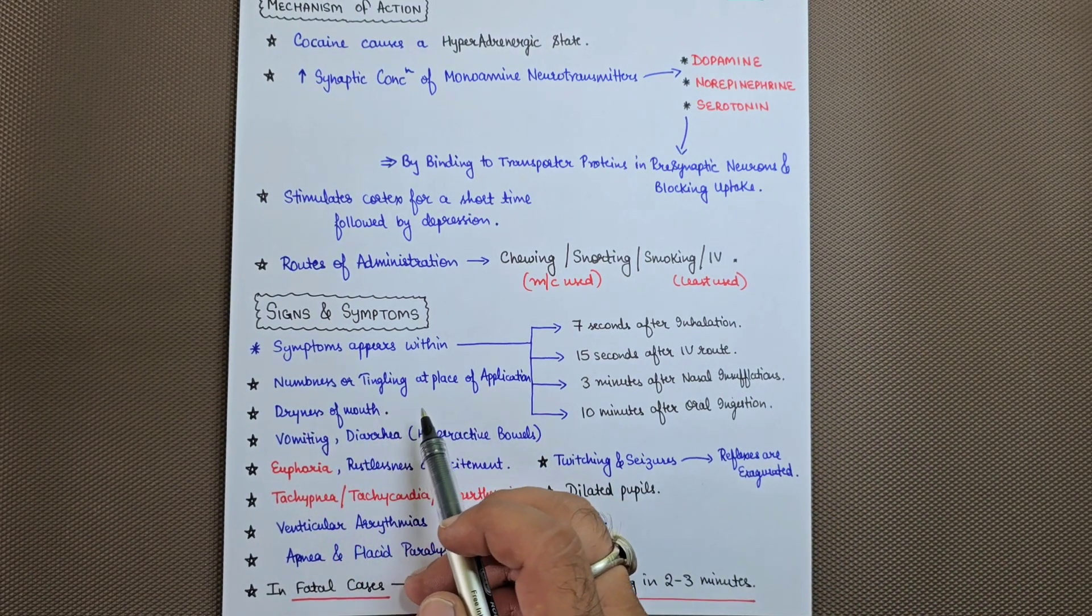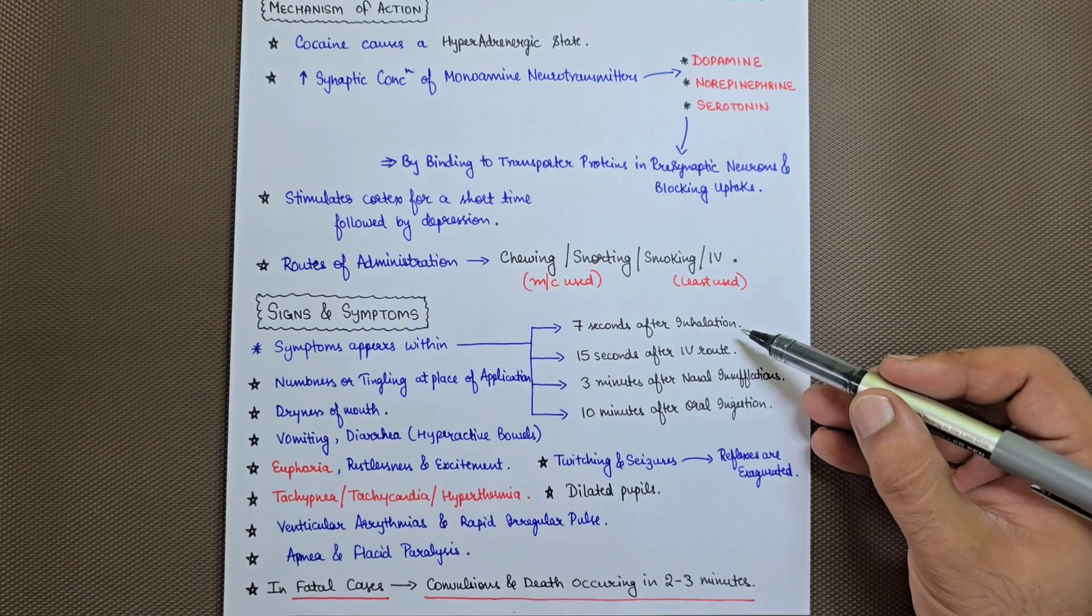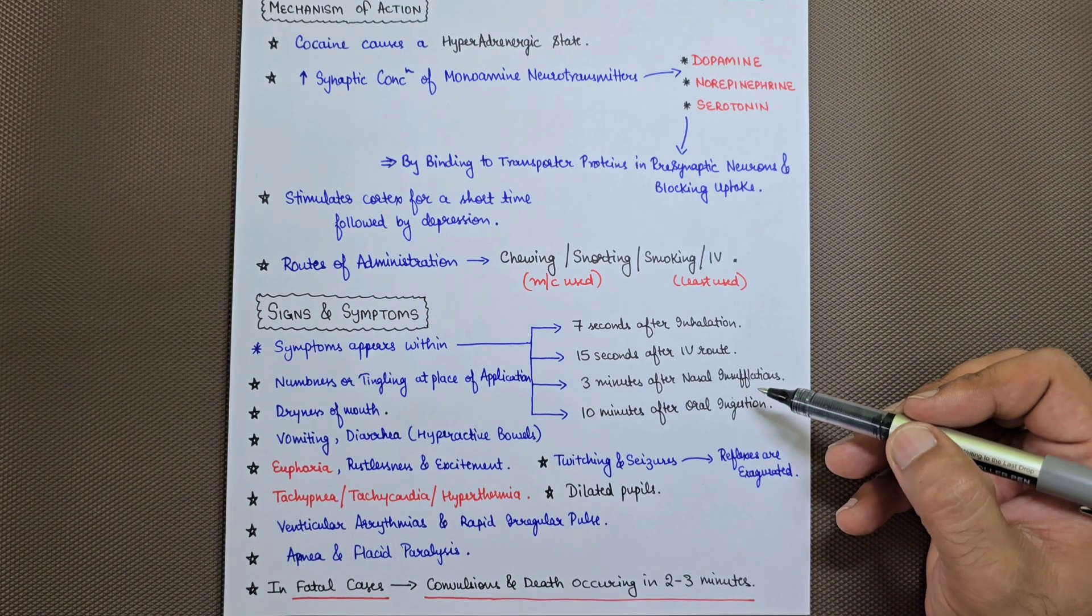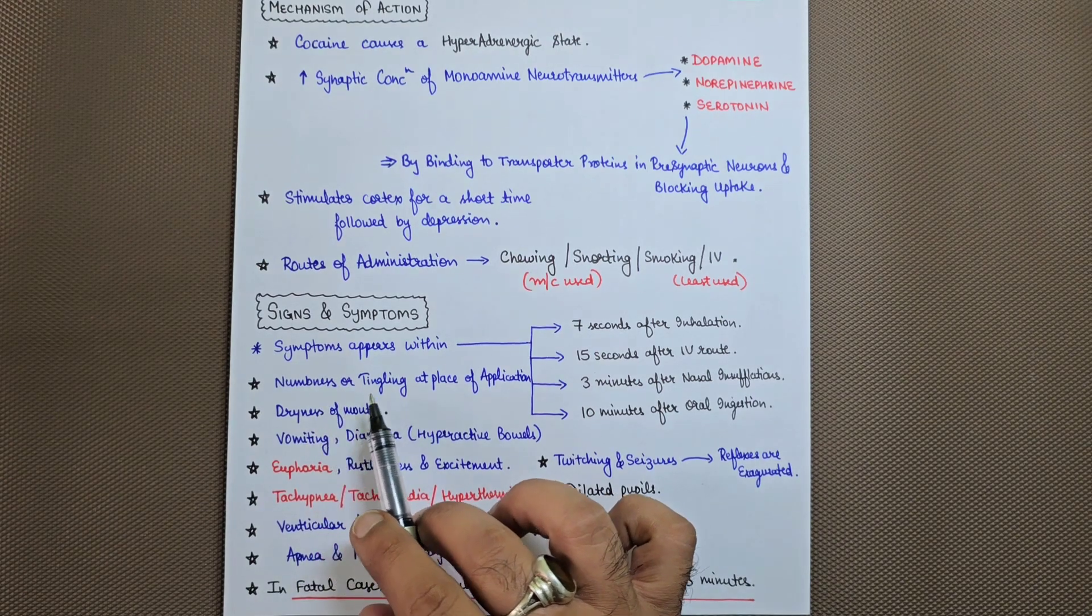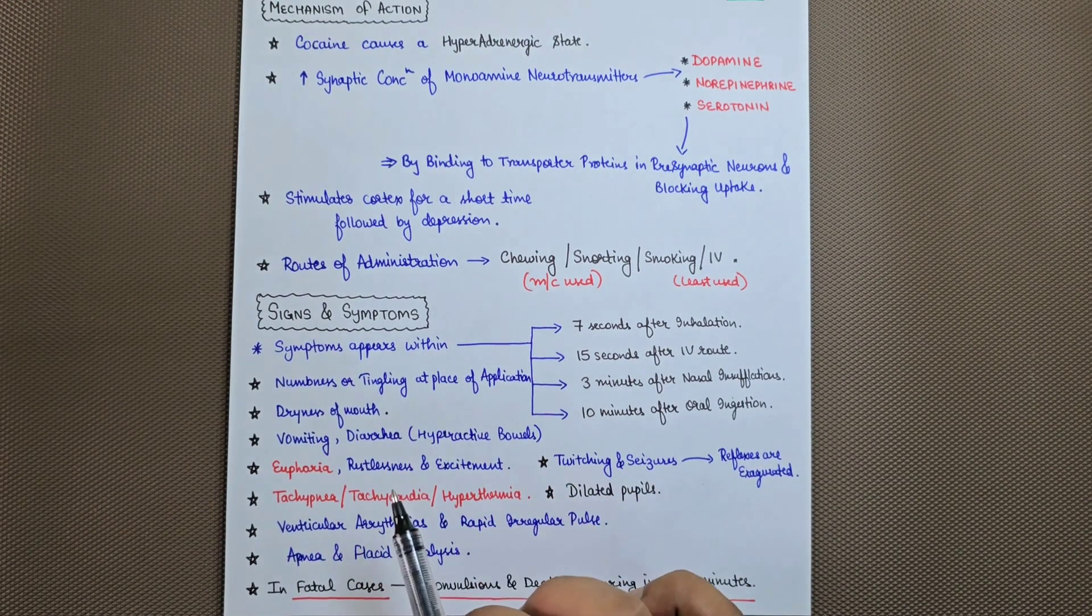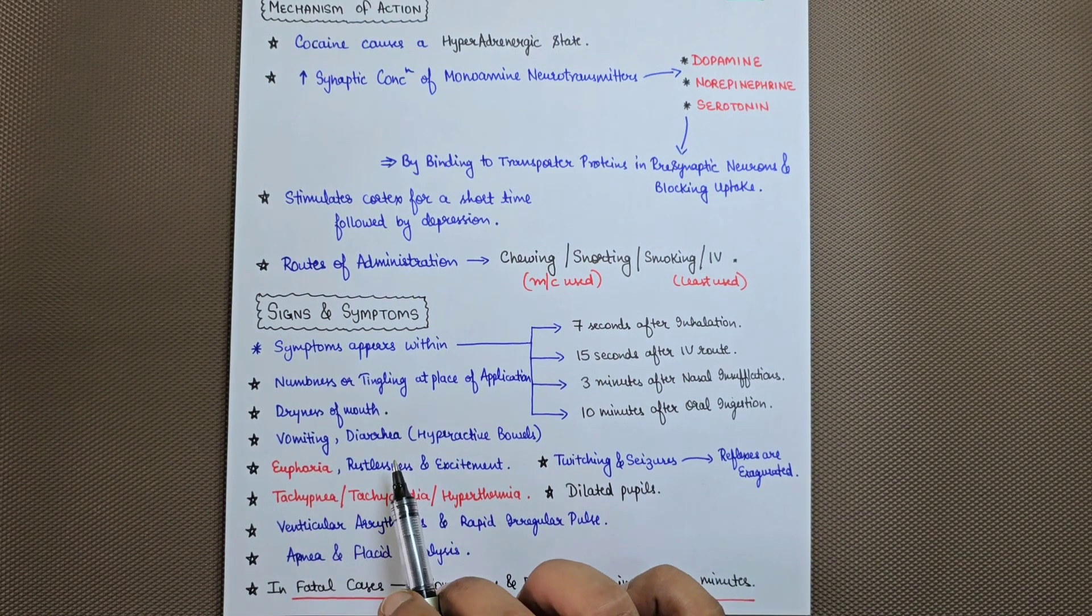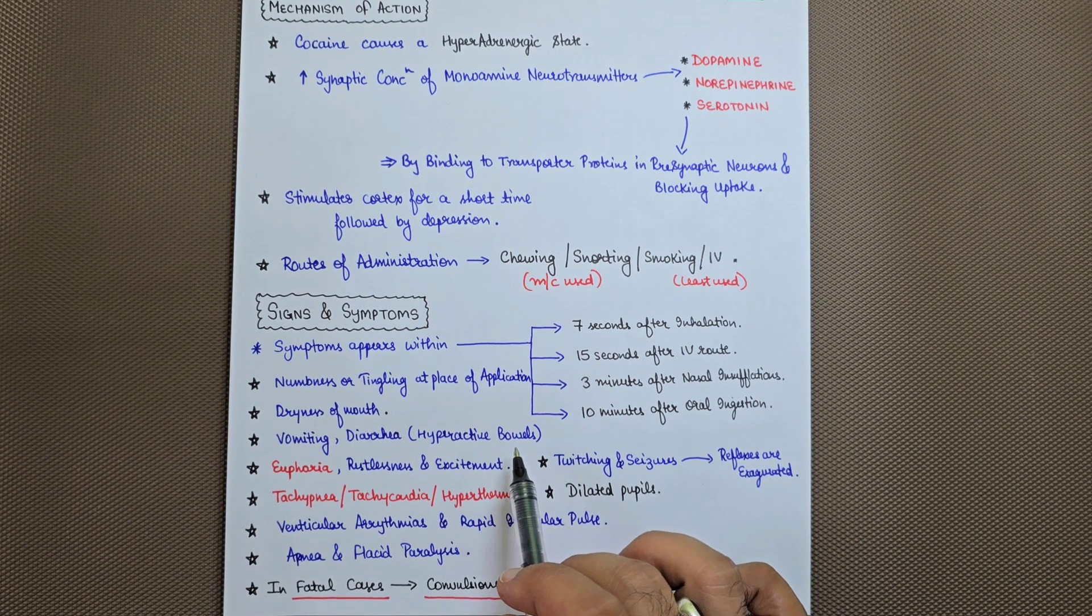The patient will feel numbness or tingling at the place of application, whether inhaled, IV route, nasal insufflation, or oral ingestion. There will be dryness of mouth, vomiting, followed by diarrhea, and the bowels will be hyperactive.